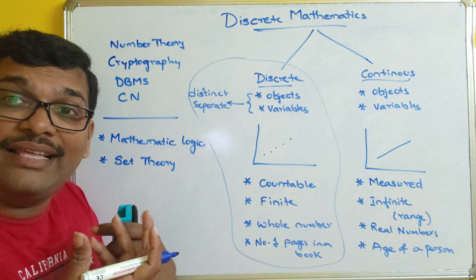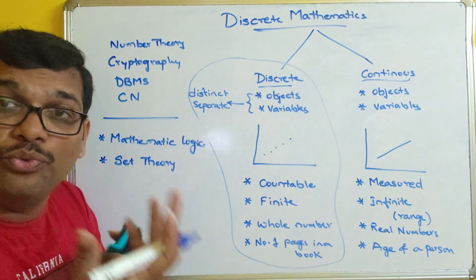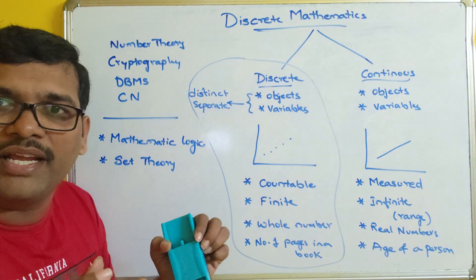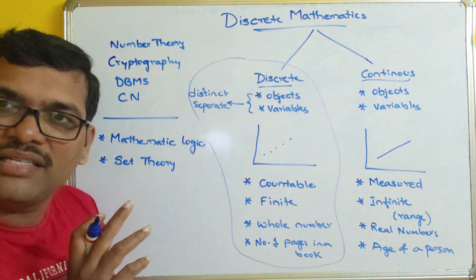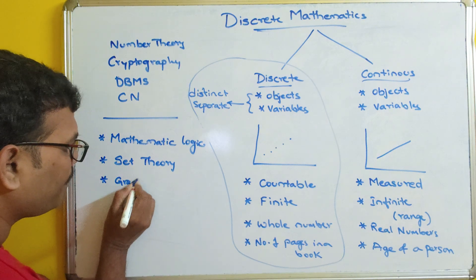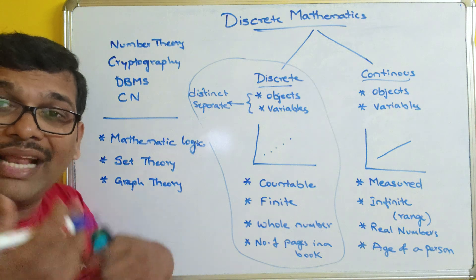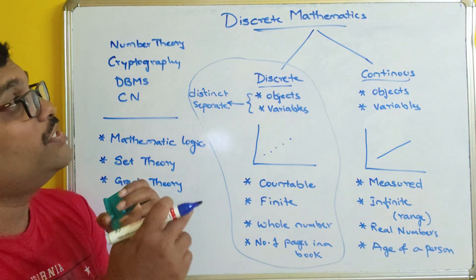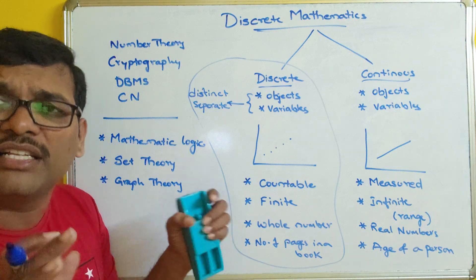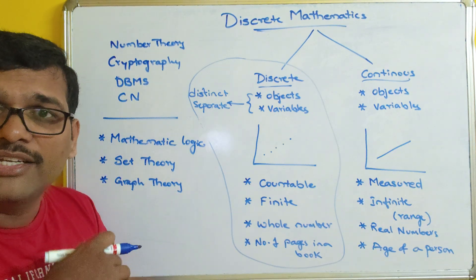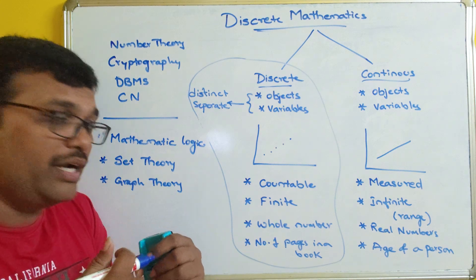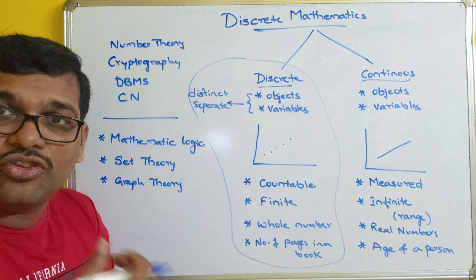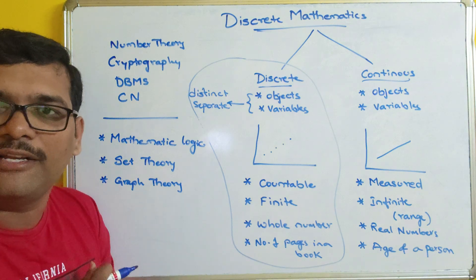The next topic is set theory — the collection of elements and set operations like union and intersection, avoiding duplicates, and so on. After that comes graph theory: pictorial representations as structures where we study different kinds of graphs, graph traversals, trees, and tree traversals. These structures follow discrete mathematics, which is also why it is called discrete mathematical structures.